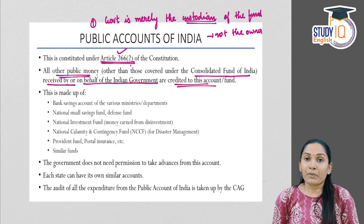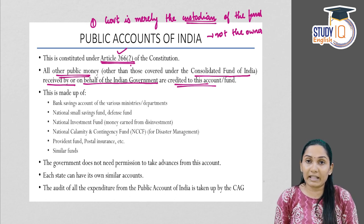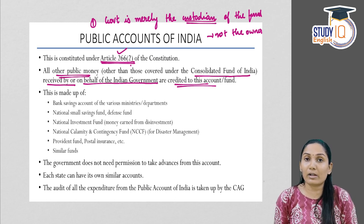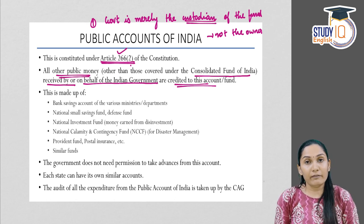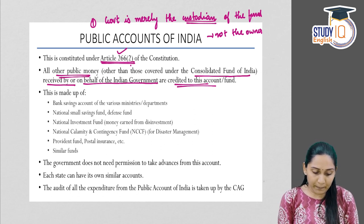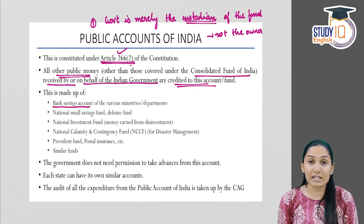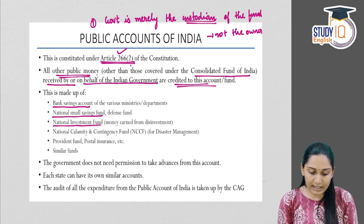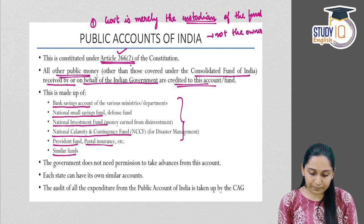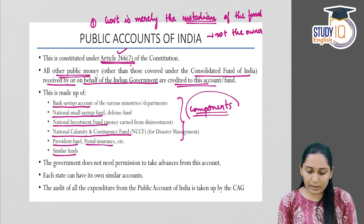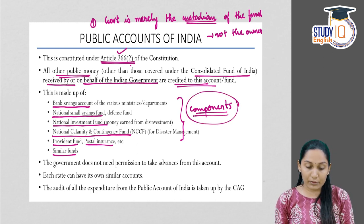Whatever funds do not go into the Consolidated Fund of India go into Public Accounts of India. Public Accounts is made up of bank savings accounts of various ministries and departments, the National Small Savings Fund, Defense Fund, National Investment Fund, National Calamity and Contingency Fund, Provident Fund, Postal Insurance, and similar funds. These components together make up the Public Accounts of India.